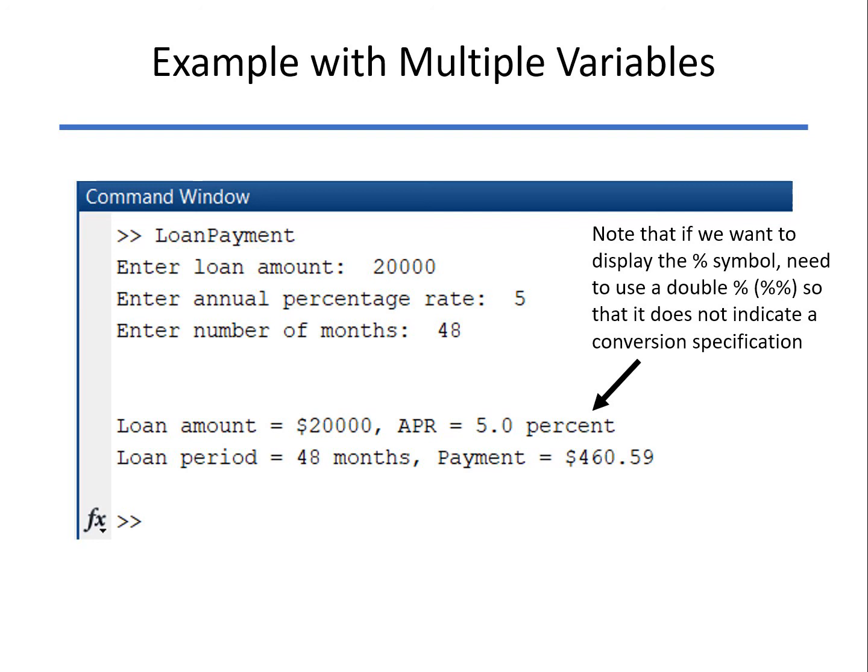If I wanted to show the percent key, I'd have to put that in twice, because otherwise the percent key, remember, is assumed to be a conversion specification, so if you do the double, then one of those percents would get printed to the screen.